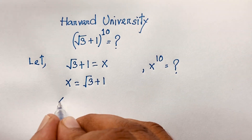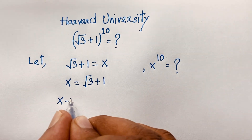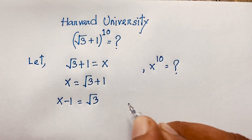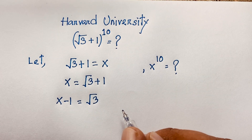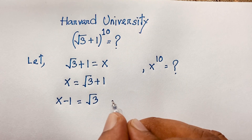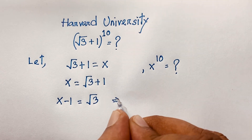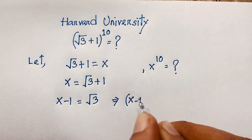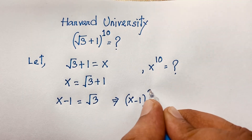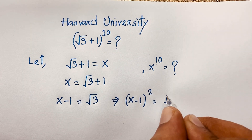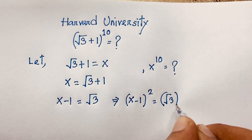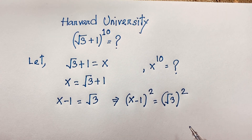Moving to this side, it will be x minus 1 is equal to square root 3. Then I use both sides whole square: x minus 1 whole to the power 2 is equal to square root 3 whole to the power 2. I use both sides whole square.